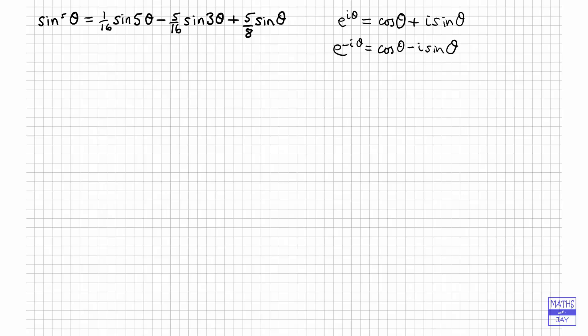Now we can combine those two to eliminate the cos theta. Basically we're going to subtract the second of those formulae from the first, and that will give us, when we divide by 2i, that sine theta is equal to 1 over 2i times e to the i theta minus e to the minus i theta.